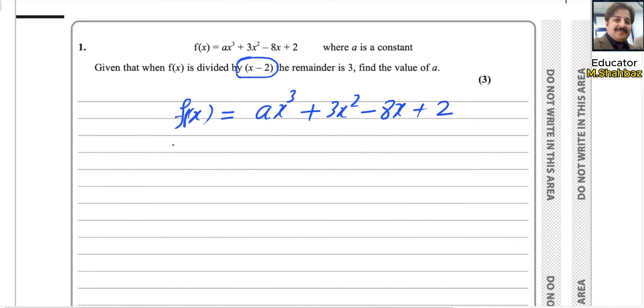you can plug in the value by using x minus 2 equals 0, and you can use the value of x as 2. Replace x with 2. So it will be 2³, because x value is 2. You are replacing x with 2, plus 3 times 2² minus 8 times 2 plus 2.